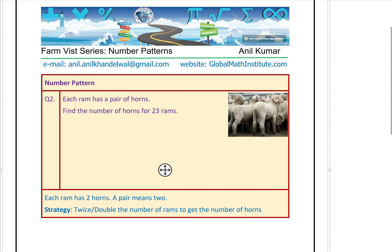Number patterns help in relating the Rams with the number of horns. The number of Rams times two gives us the number of horns. Now we have a reverse thing to do this time.